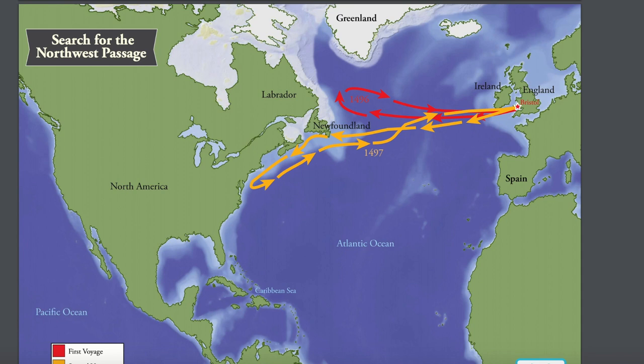Cabot's second voyage was more successful. Again, he had only one ship — a small ship called the Matthew — with a crew of just 18 men. Cabot and his men set sail from Bristol in May of 1497. They sailed past Ireland and across the Atlantic. On June 24th, they sighted land. Historians think Cabot made landfall somewhere in the area of southern Labrador, Newfoundland, or Cape Breton Island in present-day Canada, though the exact location is not known for certain.